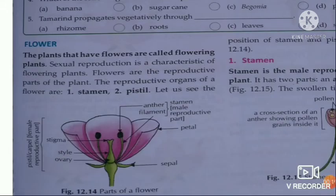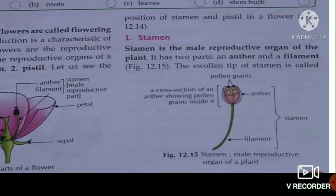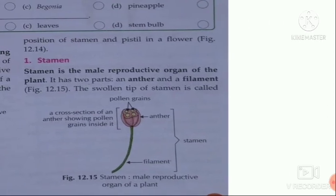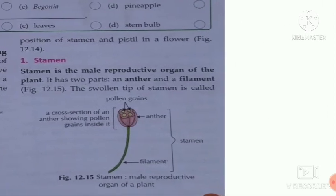Flowers are the reproductive organs of the plant. Stamen is the male reproductive organ. It is divided into two parts. The upper part is two-lobed and is called the anther. The thread-like structure is the filament.